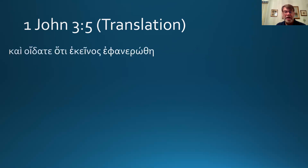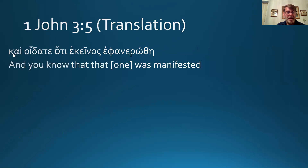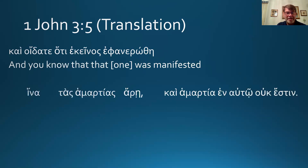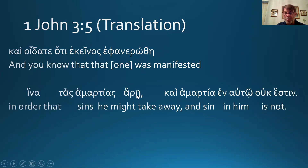Now let's do that in slow motion all over again. 'And you know that that one was manifested.' This is oida again. Typically after verbs of knowing or saying, we have a noun clause — 'you know that.' 'That one' is a demonstrative pronoun. English uses 'that' to introduce a noun clause, as a demonstrative pronoun, and also as a relative pronoun — lots of 'thats' in English. 'That one was manifested' — remember, this is literally 'was manifested' but has the sense of 'appeared.' 'In order that' introduces a purpose clause. 'He might take away the sins.' And 'sin in him is not.'